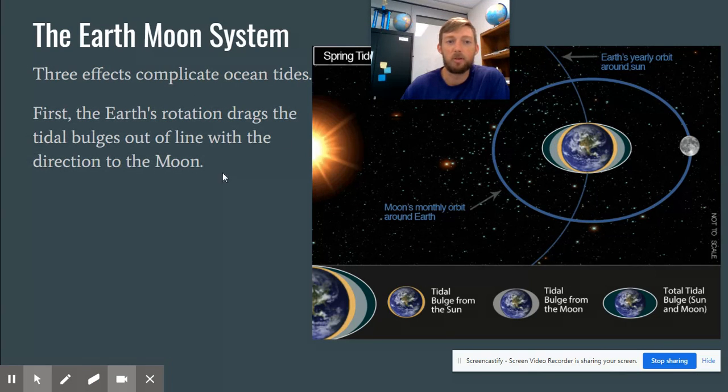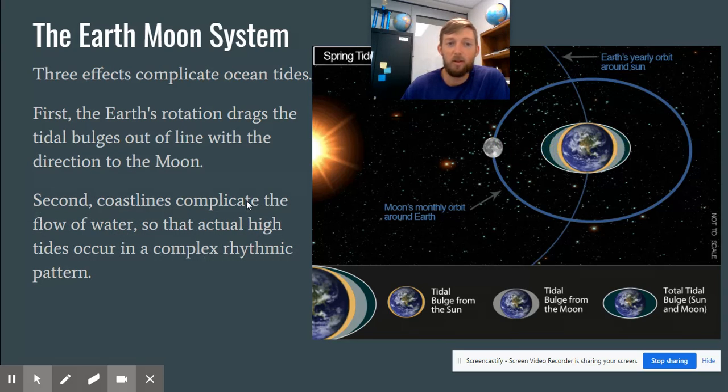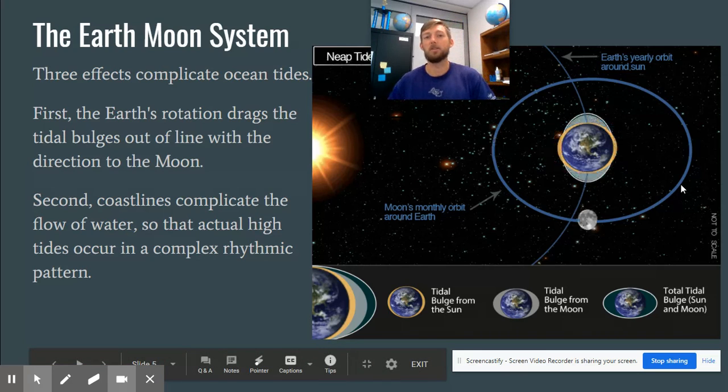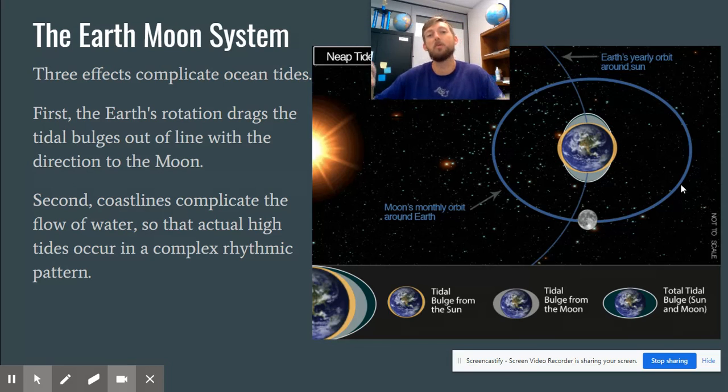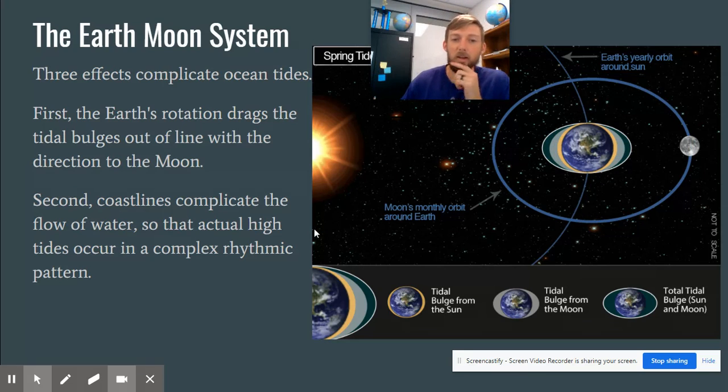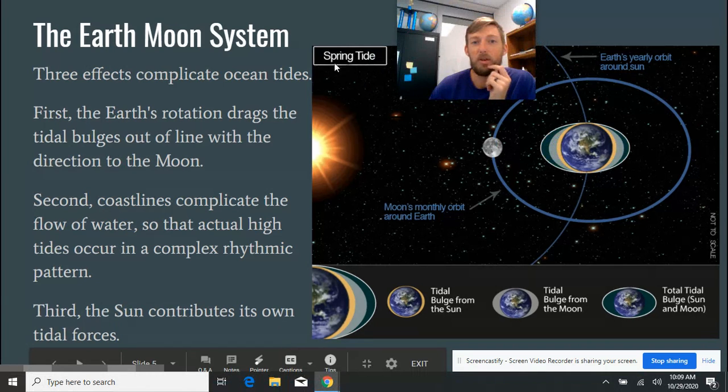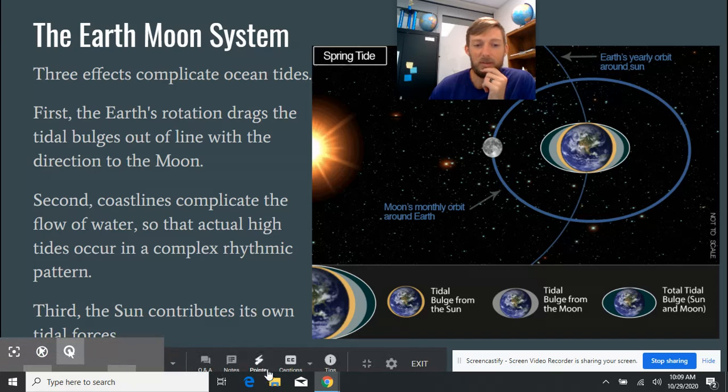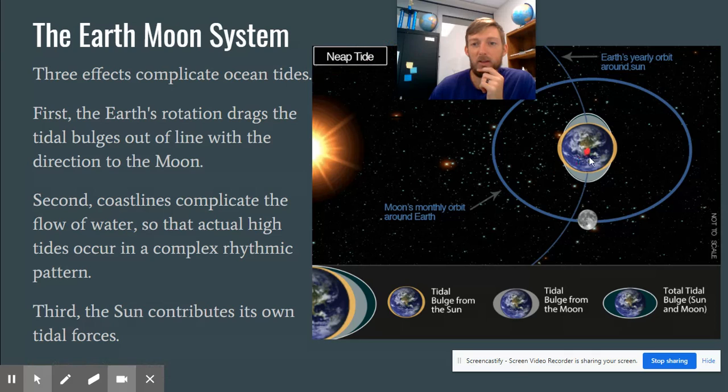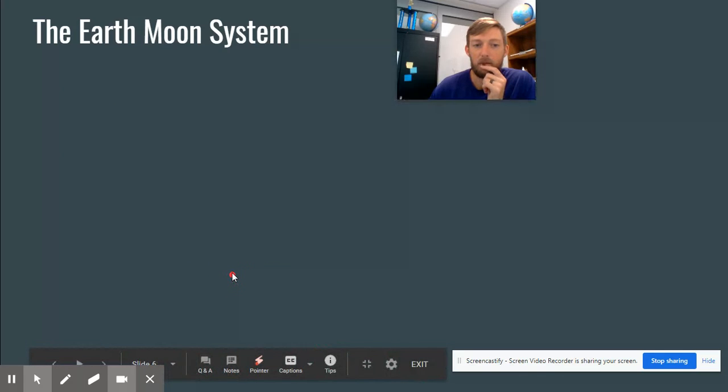So the different things that affect the tide, first we have the Earth's rotation, drags the tidal bulges out of line with the direction of the Moon. Second, you have coastlines. Coastlines are going to affect the tide because it's not just this blank plane. There's stuff in there, and so those coastlines are going to affect the way that the tides move. And third, you have the Sun. Now, there's two different kind of vocabulary words that go with this. We've got springtide, as you can see right here, and neeptide. Neeptide is when the Moon is perpendicular to the Sun's pull. Springtide is when the Moon is lined up either across from the Earth or on the same side as the Earth.